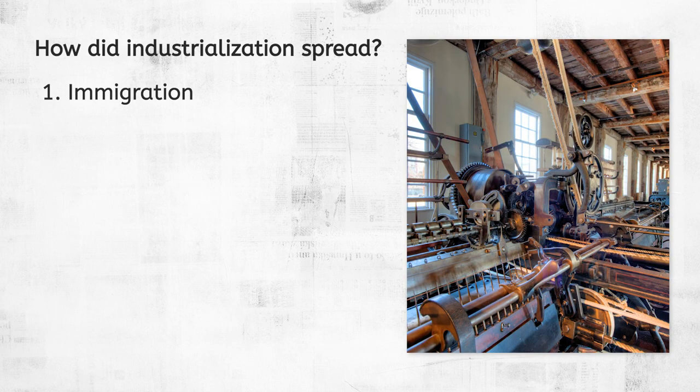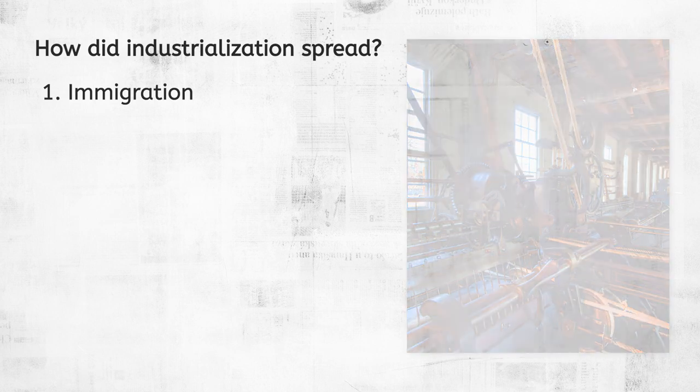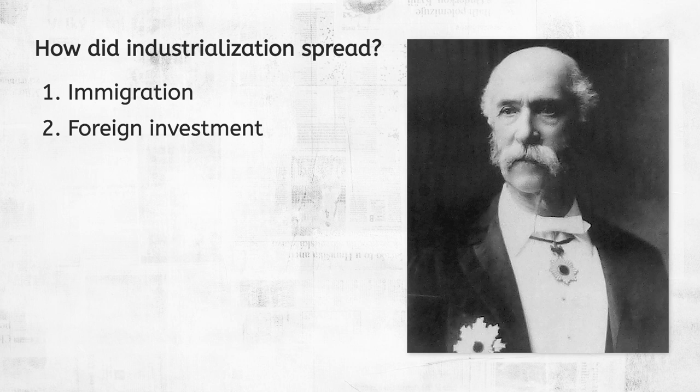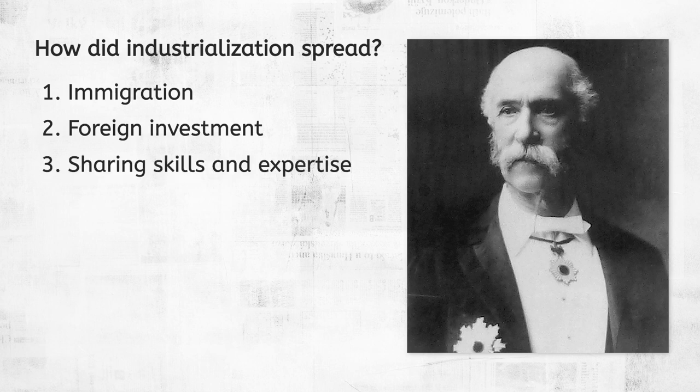First, immigration. In 1789, Samuel Slater emigrated from Britain and set up the first textile factory in the US, which used the spinning mule to manufacture cotton. He constructed the mill from memory because British officials would have confiscated any plans or documents when he left Britain. Second, foreign investment. In 1868, Scotsman Thomas Blake Glover introduced the steam locomotive to Japan, prompting Japan to construct its own rail system. The railroad was partly funded by foreign investors, the British, and designed by European engineers who agreed to share their skills and expertise with their Japanese colleagues. That gives us number three on the list: sharing skills and expertise.